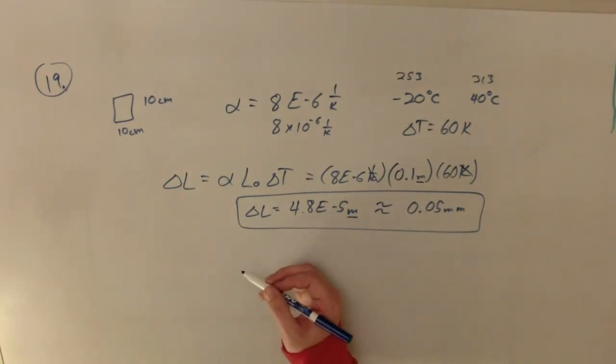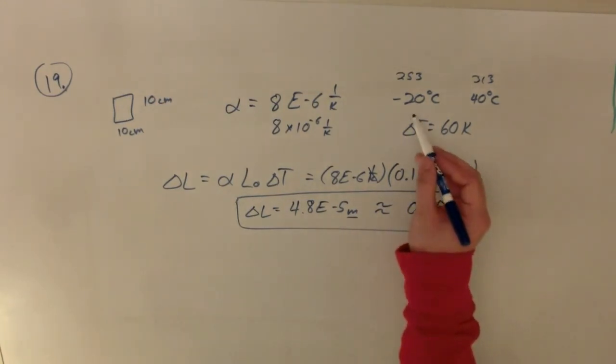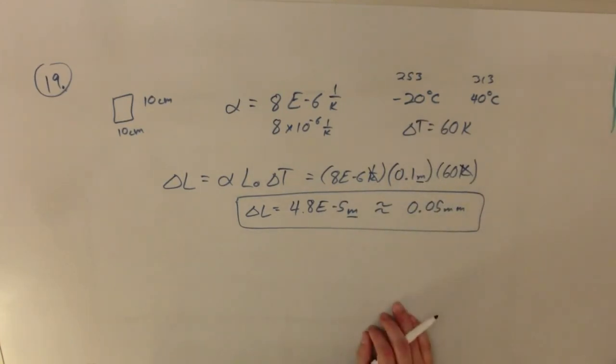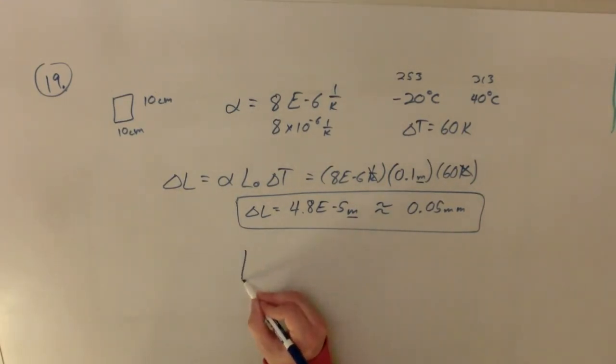And so if it went through and it warmed up 60 degrees, maybe I'd put it down outside when it's negative 20, which I wouldn't recommend, and then it went all the way up to 40, then I would have the sides would be 10 point, what's that going to be? 0, 0, is there another 0 in there? 5, something like that? That's a millimeter.